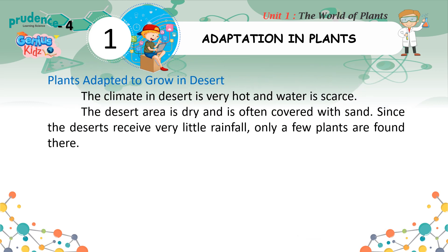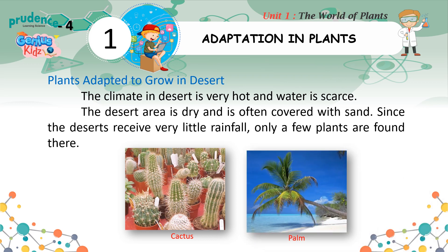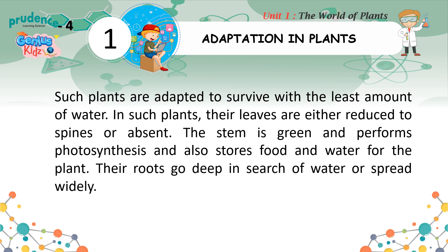Plants adapted to grow in desert: The climate in deserts is very hot and water is scarce. The desert area is dry and is often covered with sand. Since deserts receive very little rainfall, only a few plants are found there. Such plants are adapted to survive with the least amount of water. Their leaves are either reduced to spines or absent. The stem is green and performs photosynthesis, and also stores food and water. Their roots go deep in search of water or spread widely.